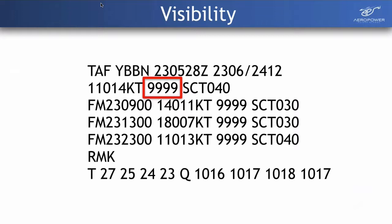Next section is visibility. This tells us in metres how far we can expect to see at that airfield according to the forecast. It could be 5,000 or 8,000 metres. As soon as visibility gets above 10,000 metres, it's just represented as 9999. So whether it's 10 km or 20 km, once you're above 10 km, visibility is written as 9999.